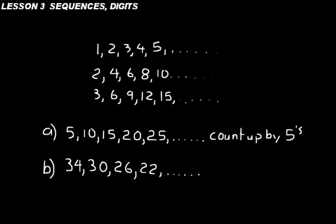On B, we're counting down by fours. That's thirty-four, minus four is thirty, minus four is twenty-six, minus four is twenty-two. So we're counting down by fours in B.